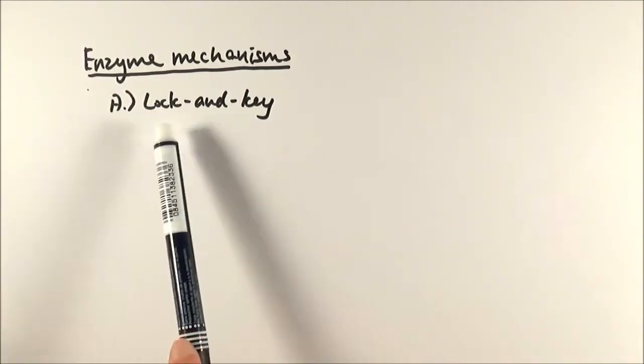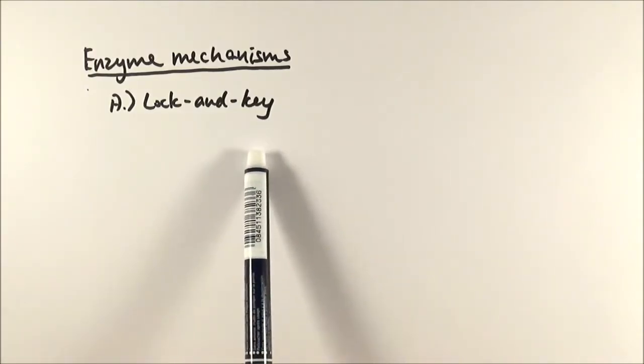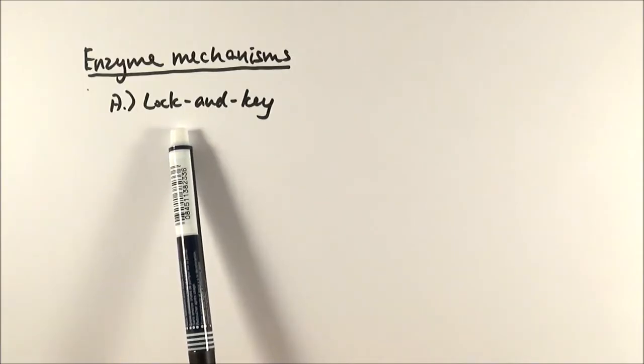So for example, if we have amylase, which breaks down starch, these two will fit. However, if we have proteins instead, it will not fit the right lock.